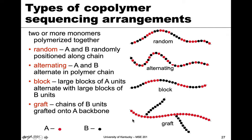You can also have graft copolymers, where you have a chain of A and then chains of B are grafted off of it to form a branched structure. There are different options for how we make copolymers, and this is all controlled by the synthesis method. Some arrangements take more effort to produce than others, but the synthesis method is what controls how we can arrange these copolymers.